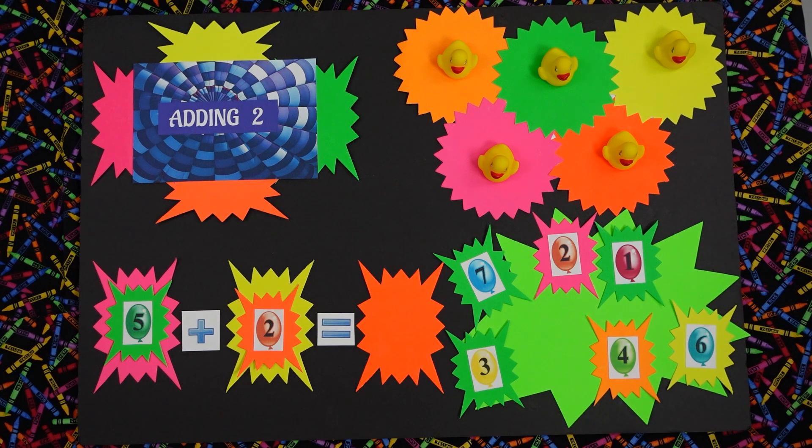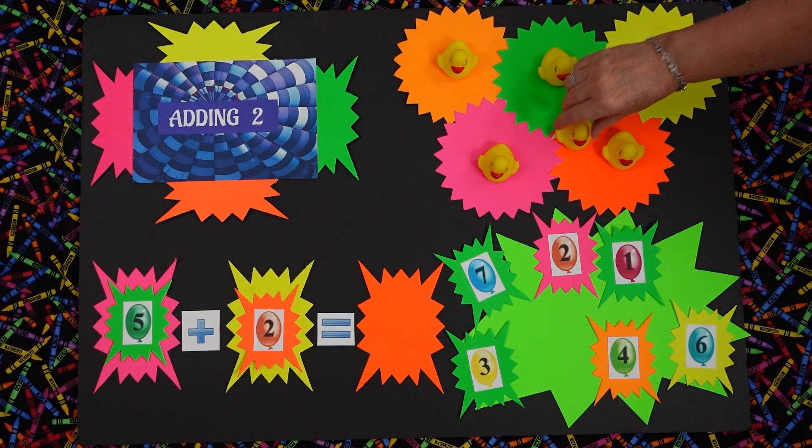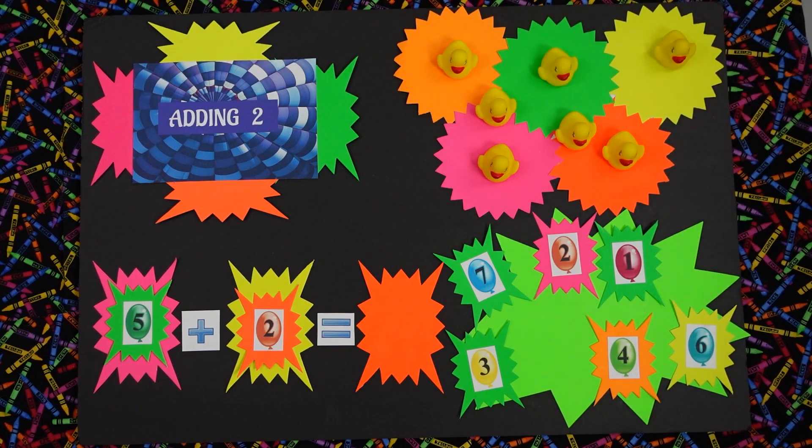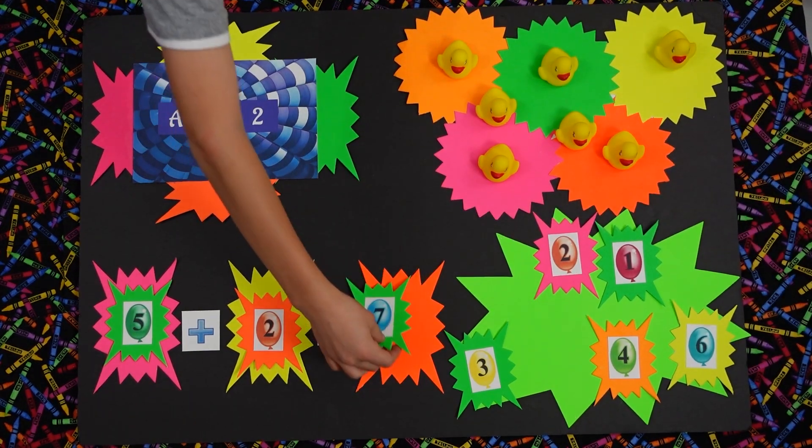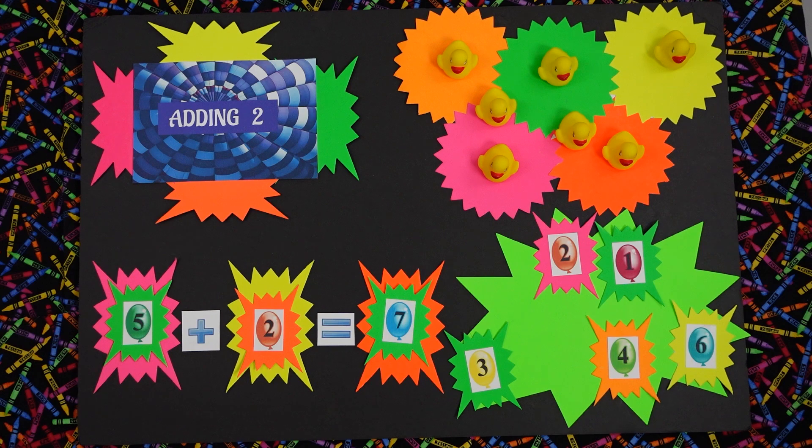So Lily, how many more are we supposed to add? Two. Two. Let's do that. Let's go one, two. Now how many do we have all together? Seven. Seven. Very good. We have seven. Can you point to the number seven for us? Good. You want to put it in the right spot? And there we go.